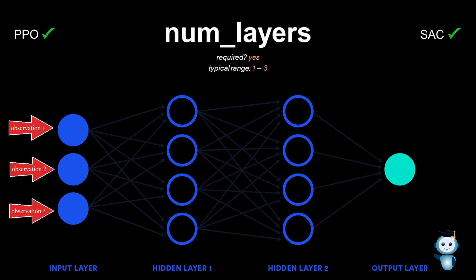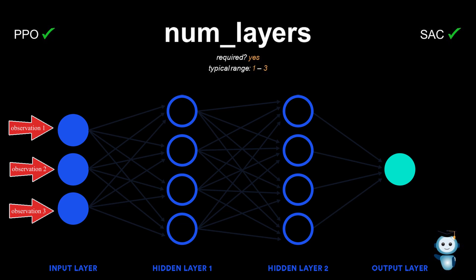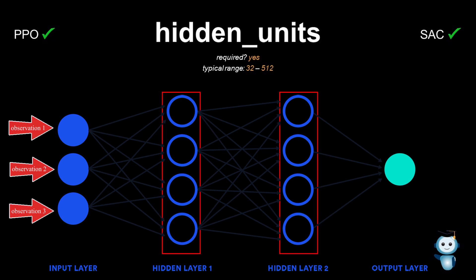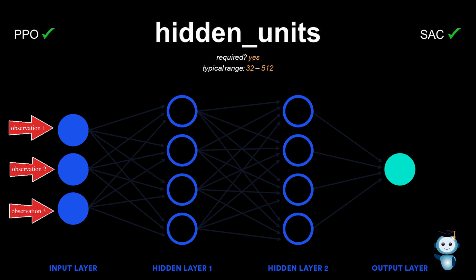Another parameter that influences the shape of the neural network is called hidden units. While numLayers is used to set the depth of the neural network, the hidden units parameter determines the number of neurons in each of the hidden layers. If the observations can be easily mapped to actions, this value should be small. But if it is not easy to determine the action based on the observations, or if minor changes in the observation lead to different actions, try increasing this value.